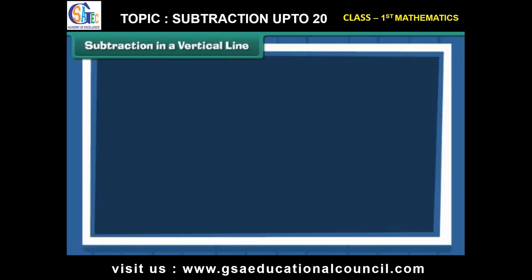Subtraction in a vertical line: Let us now subtract numbers vertically. Write the numbers one below the other. To subtract one from four, write four first, then write one below it. Draw four vertical lines next to four. Cross out one vertical line to subtract one. Count the remaining vertical lines: one, two, three. Therefore, four minus one is three.